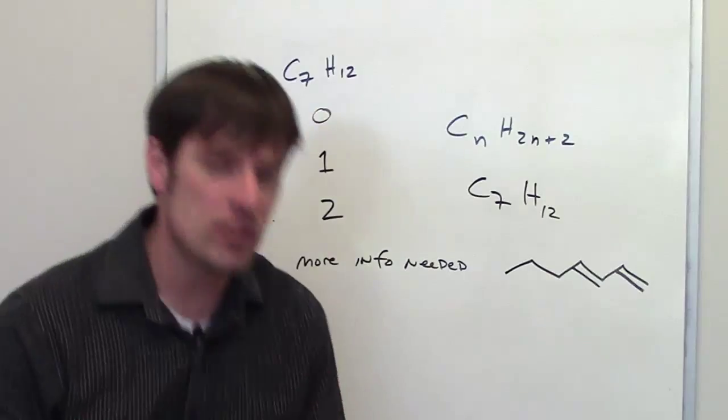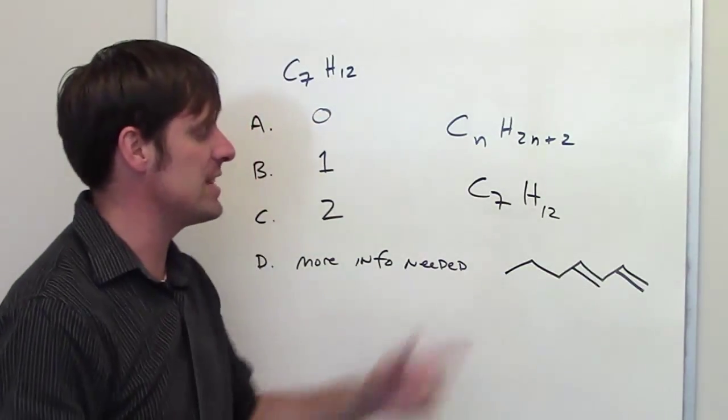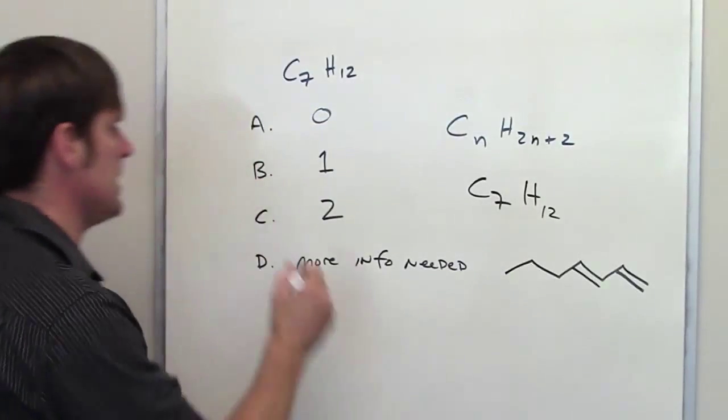So how many degrees of unsaturation, either rings or double bonds, do I have in this molecule? It's going to be 2.